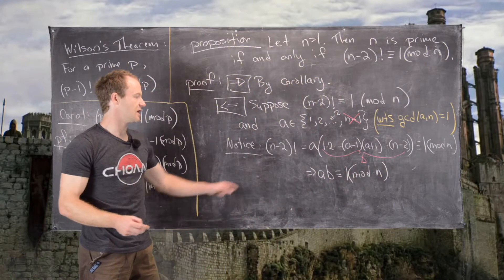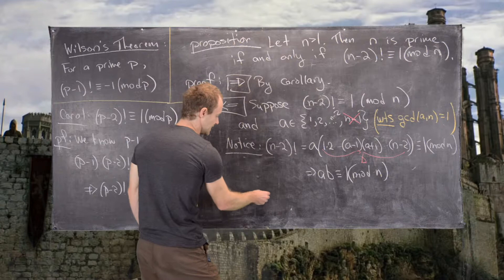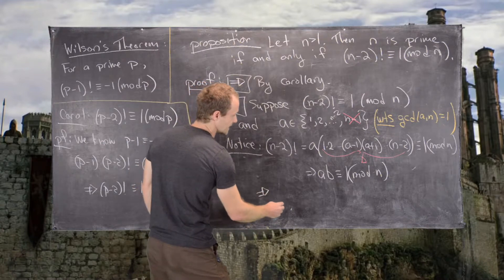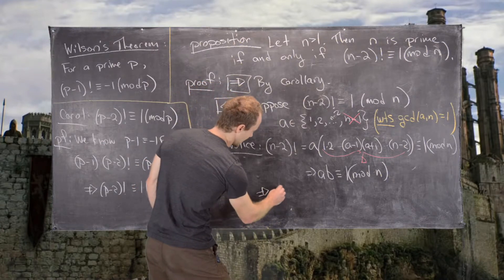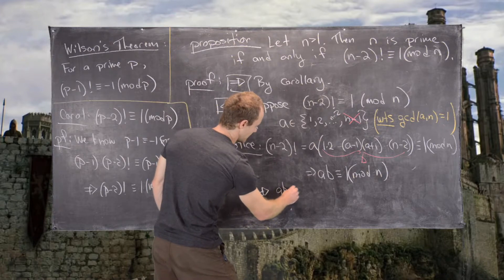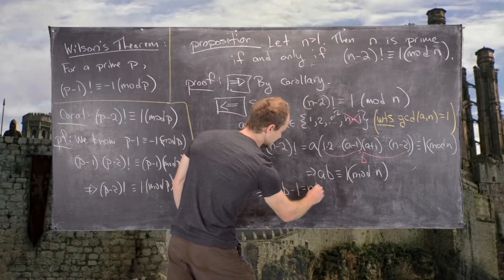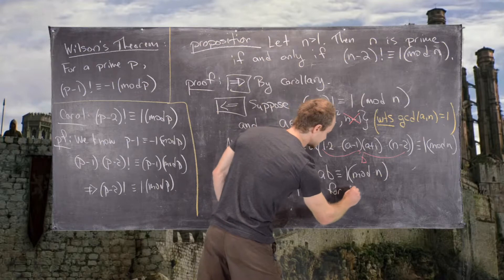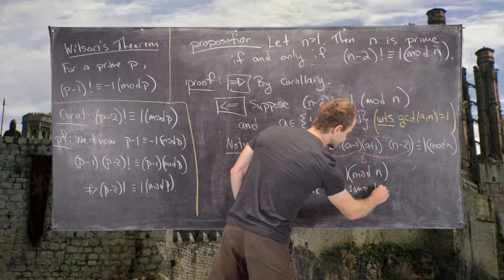Now using the definition of congruence mod n, that tells us the following: ab - 1 equals nk for some integer k.